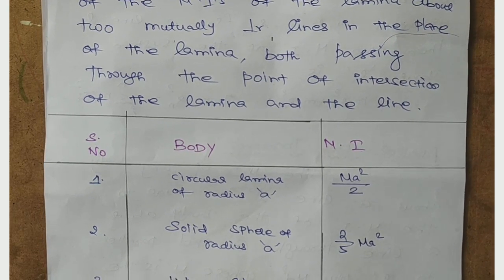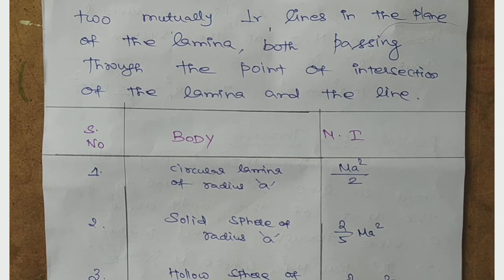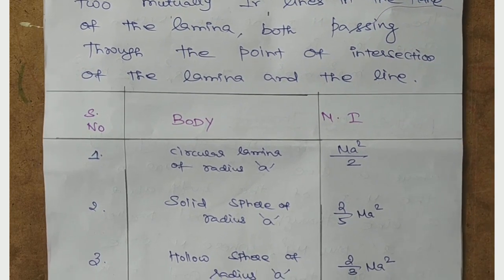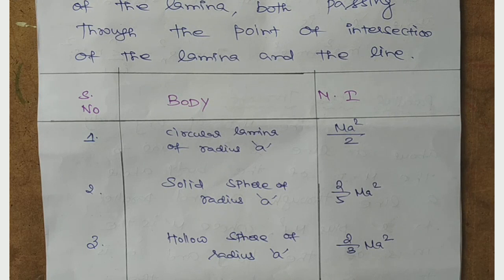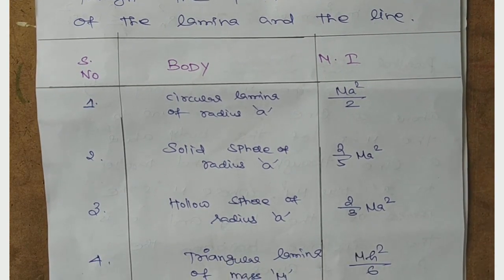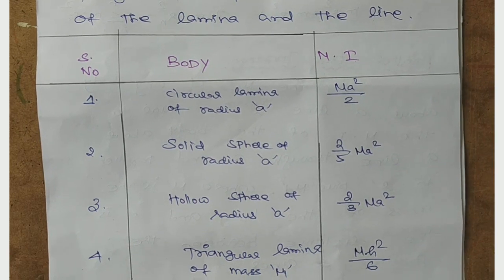First, serial number, body, moment of inertia. One: circular lamina of radius a, 1/2 ma². Next, solid sphere of radius a. The moment of inertia for solid sphere of radius a is 2/5 ma². Hollow sphere of radius a: 2/3 ma².